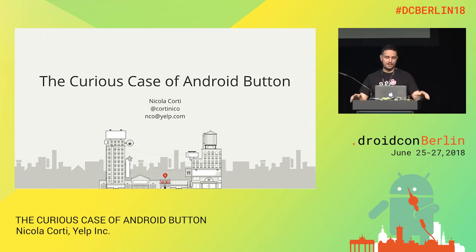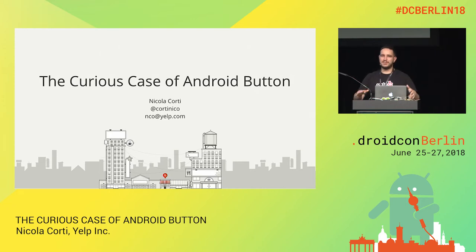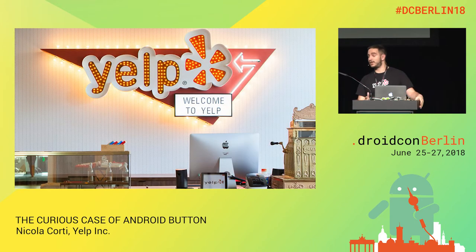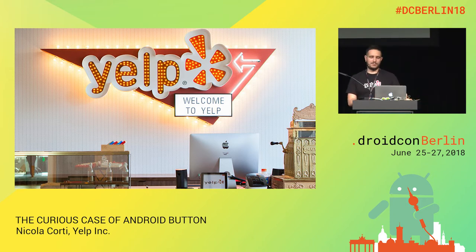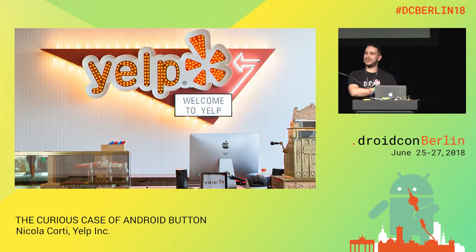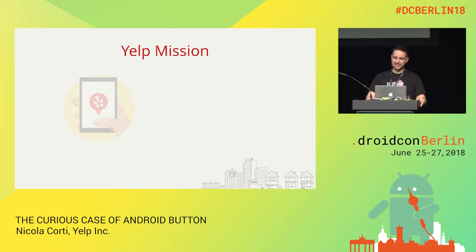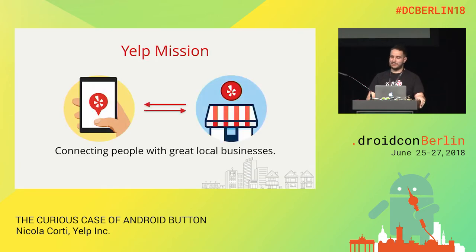Hi everyone. My name is Nicola Corti. I'm working for Yelp. Today we're going to talk about the curious case of Android buttons. I hope you got lunch. We're going to start smoothly and then things will get technical. If you don't know Yelp, we are basically a social network based in San Francisco with a couple of offices also in Europe, specifically one in Hamburg. And our mission is to connect people with great local businesses.